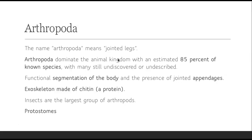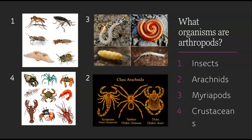Arthropods have a functional segmentation of the body and the presence of jointed appendages. They have an exoskeleton made of chitin, which is a protein. You know this because if you ever stepped on an arthropod, you would hear a crunch — that's the exoskeleton made of chitin. The insects are obviously the largest group of arthropods, and they are protostomes. What organisms are arthropods? Insects, arachnids, myriopods like millipedes and centipedes, and also the crustaceans.